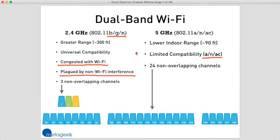The 2.4 gigahertz band is also plagued with non-Wi-Fi interference. If 2.4 gigahertz is good for Wi-Fi devices, it's good for non-Wi-Fi devices as well. It's unlicensed spectrum, so anybody can operate anything there as long as they stick to a few basic rules. A lot of people like the range, and it works well for things like cordless phones, wireless video cameras, and even microwave ovens — so we see a lot of non-Wi-Fi activity there.